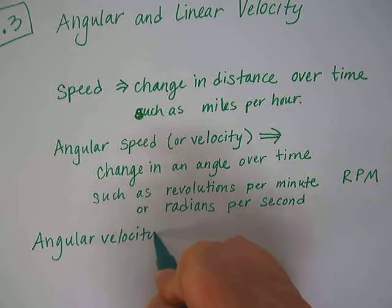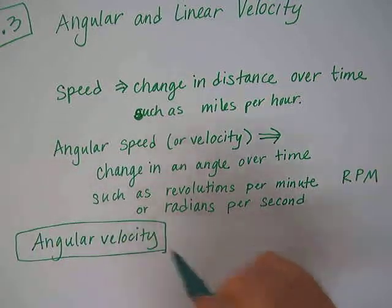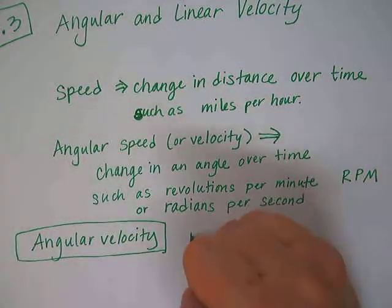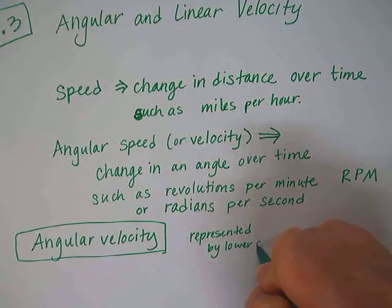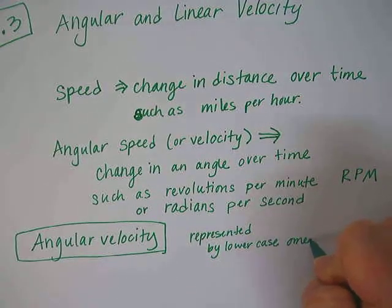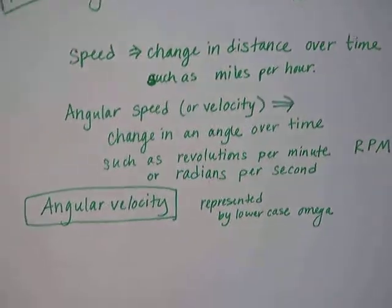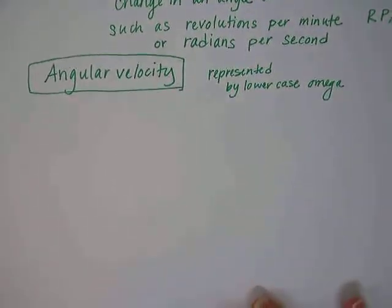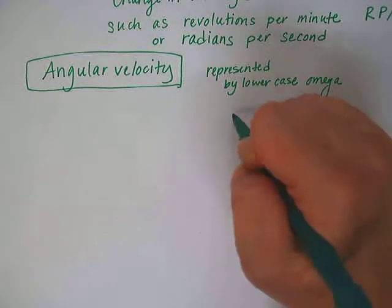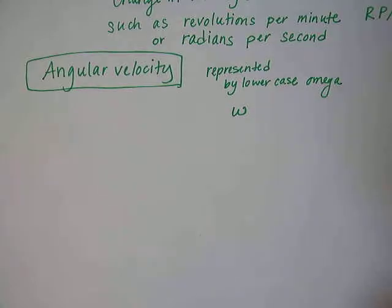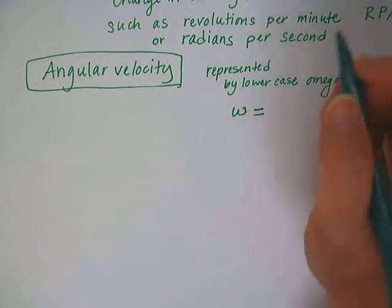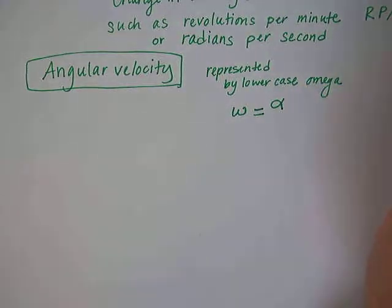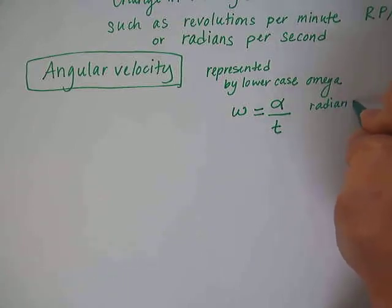So, angular velocity, I'm going to give you a formula now. Because it has to do with angles, we use a Greek letter for it. So it's represented by a lowercase omega. So if you look at your little green cards, what does a lowercase omega look like? It's kind of like a W actually, like a cursive W sort of. And omega can be found by taking an angle in radians and dividing it by time.